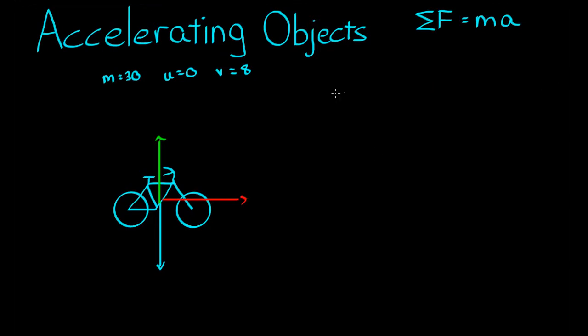The key bits of information for question one is the total time it takes to go from zero meters a second to eight meters per second is 16 seconds. So T is equal to 16 seconds. And the question we'll ask, what is the driving force on this bicycle? Fd is equal to?